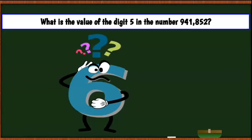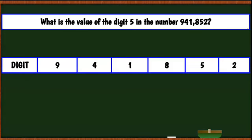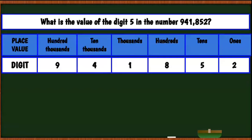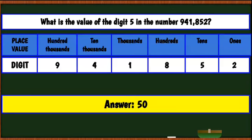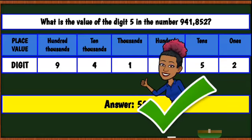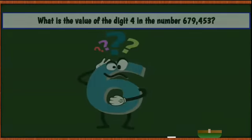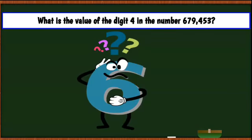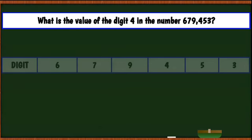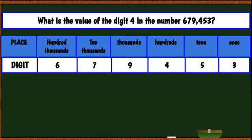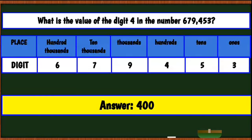What is the value of the five in the number? Looking at our digits and place values, five is in the tens place, so its value is 50. What is the value of the four in the number? Four is in the hundreds place, so its value is 400.